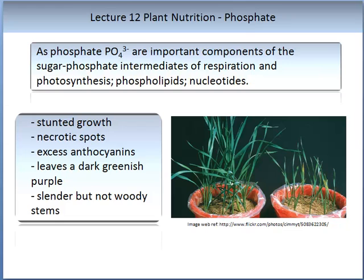Phosphate is important to plants as it is a component of the sugar phosphate intermediates of respiration and photosynthesis. It is also involved in phospholipids and nucleotides. When you see phosphorus deficiency, look for stunted growth, necrotic spots, sometimes excess anthocyanins leaving a dark greenish-purple colour on leaves, and slender but not woody stems. Here we have an image of phosphorus deficiency in wheat, showing the deficient plant alongside a healthy plant for comparison.